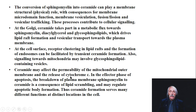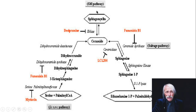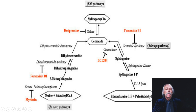Sphingomyelin broken down to ceramide via neutral sphingomyelinase, ceramide metabolized to sphingosine-1-phosphate — here's the de novo synthesis pathway, so you make ceramide two different ways. You can also re-synthesize ceramide via ceramide synthase in a salvage pathway. So there's the de novo, the salvage, and the degradation pathway. You can also make ceramide-1-phosphate. Ceramide is the key player in sphingolipid metabolism and a really important signaling molecule.